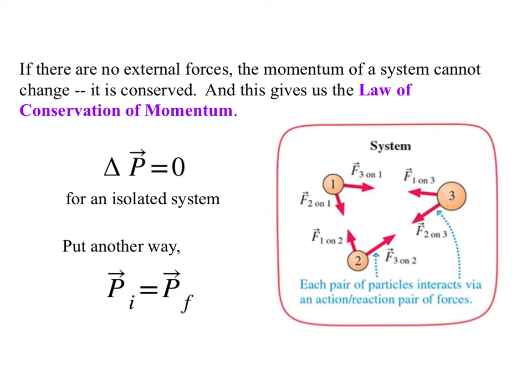If there are no external forces, then the momentum of the system cannot change. It is conserved in the classic physics way. This gives us the law of conservation of momentum, which says that delta P equals zero for an isolated system. Some people like to write that instead by saying the initial momentum equals the final momentum, which of course is algebraically the same.